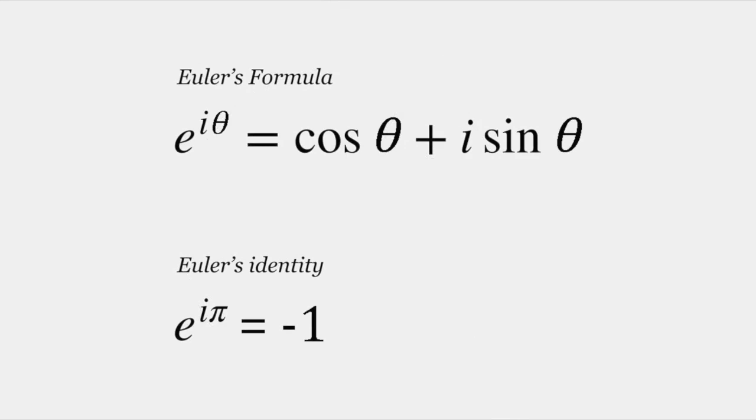From it follows the remarkable fact that e to the i pi is equal to minus 1. It's not hard to prove this, but we'll leave it for another day.